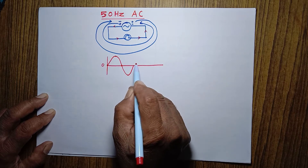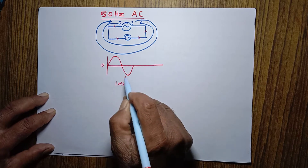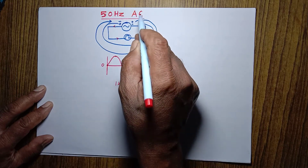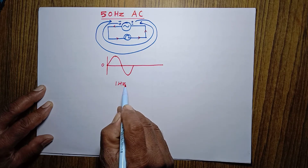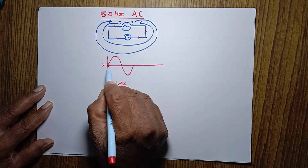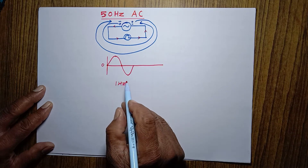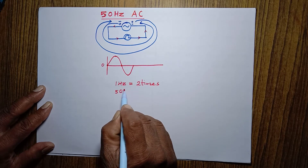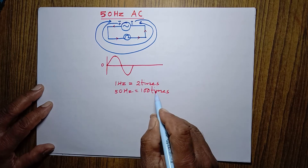One complete wave produced in one second means one hertz. Now, 50 hertz frequency of AC means 50 complete waves are produced. In one complete wave, the direction of current changes twice — once from this position to this position, and a second time back. So one hertz means two times the direction of current changes. Therefore, if one hertz equals two direction changes, 50 hertz means 50 into 2, which equals 100 times the direction of current changes — not only 50 times.